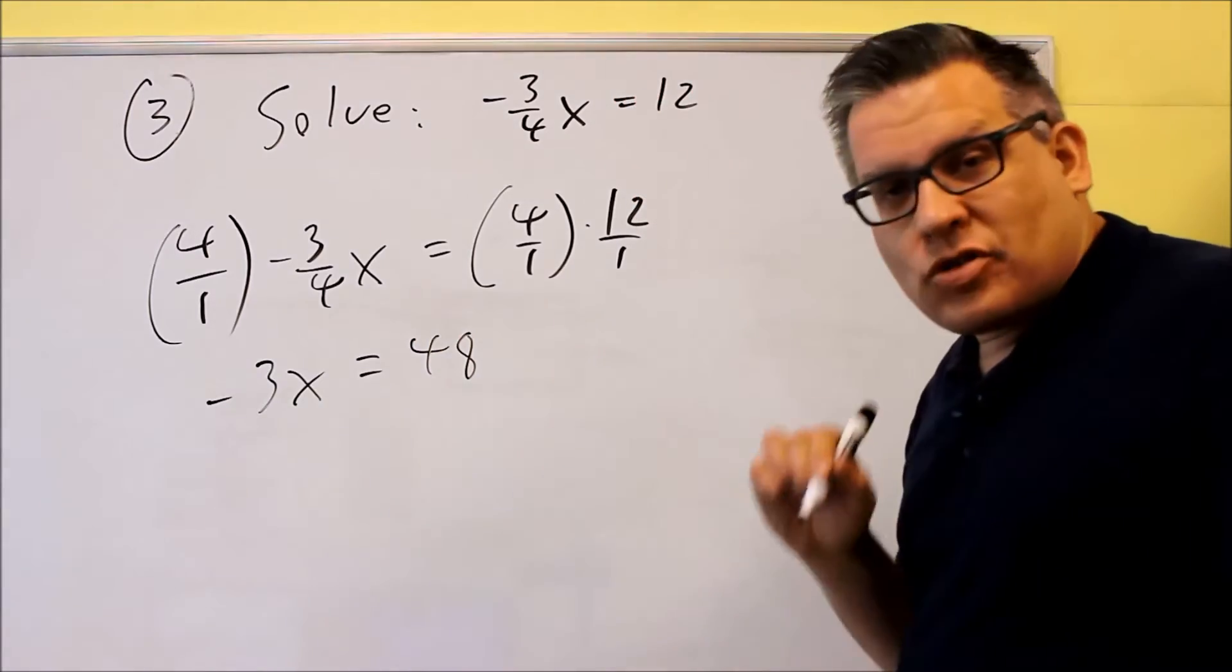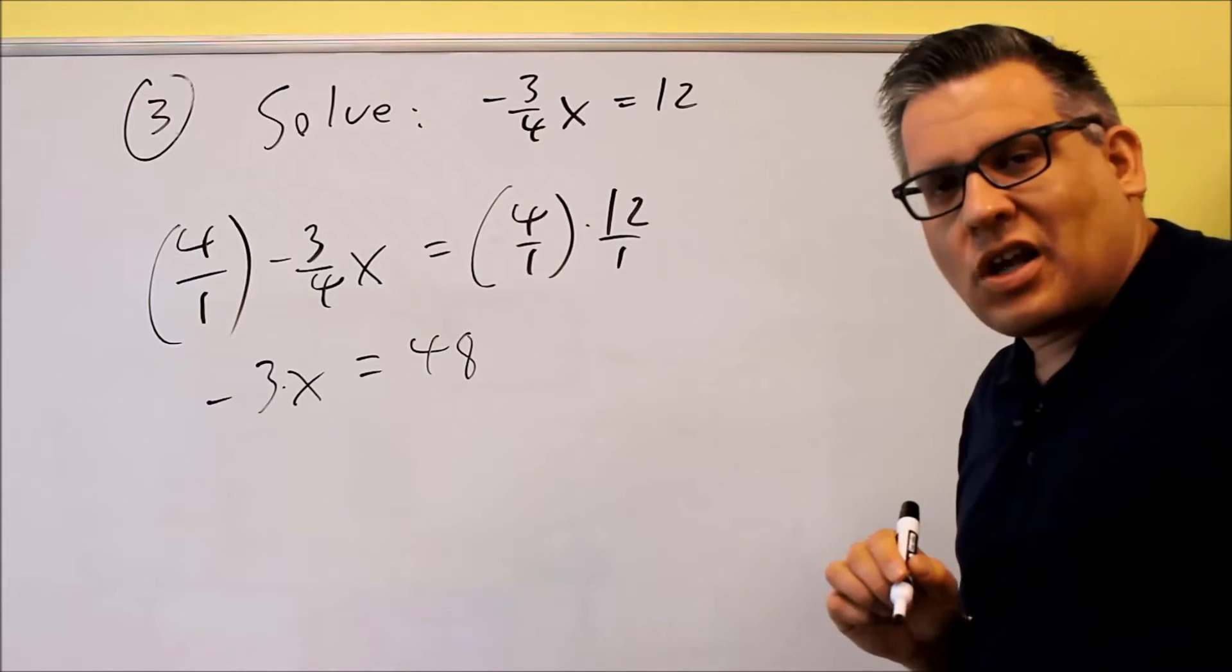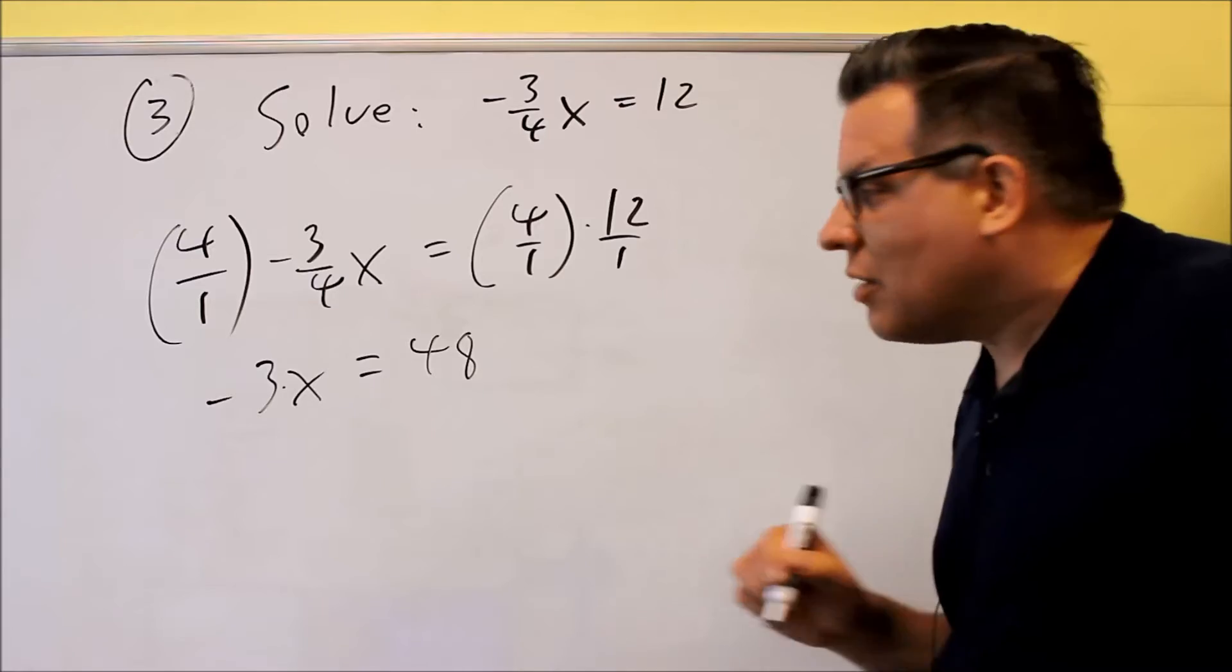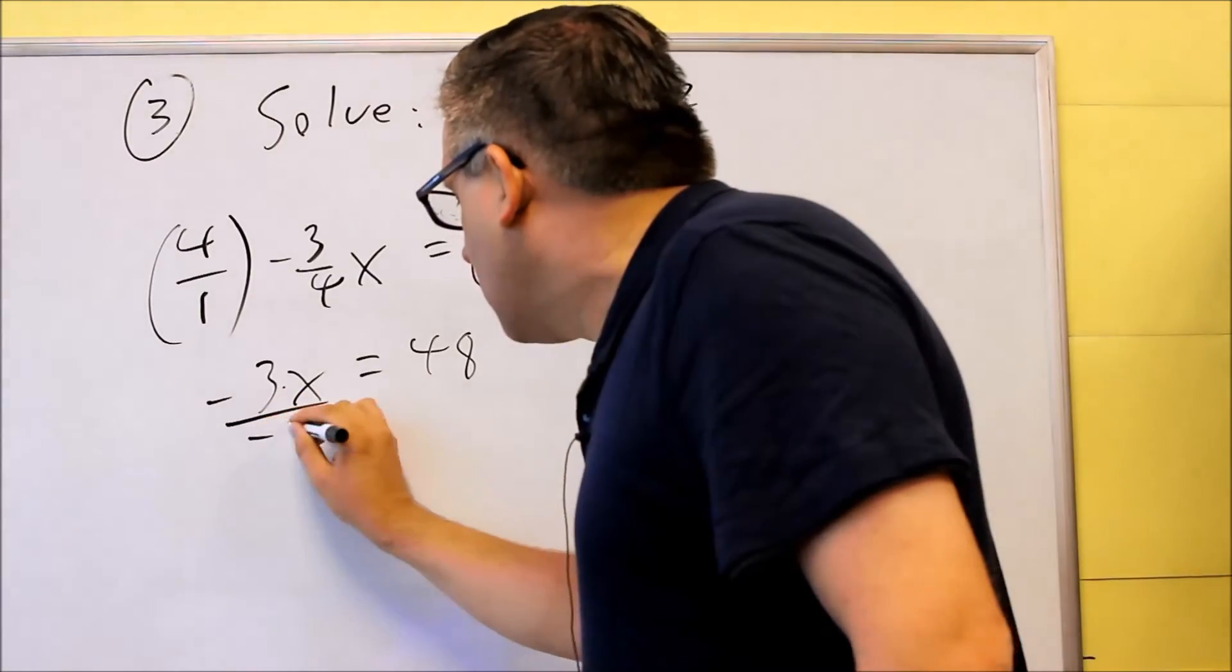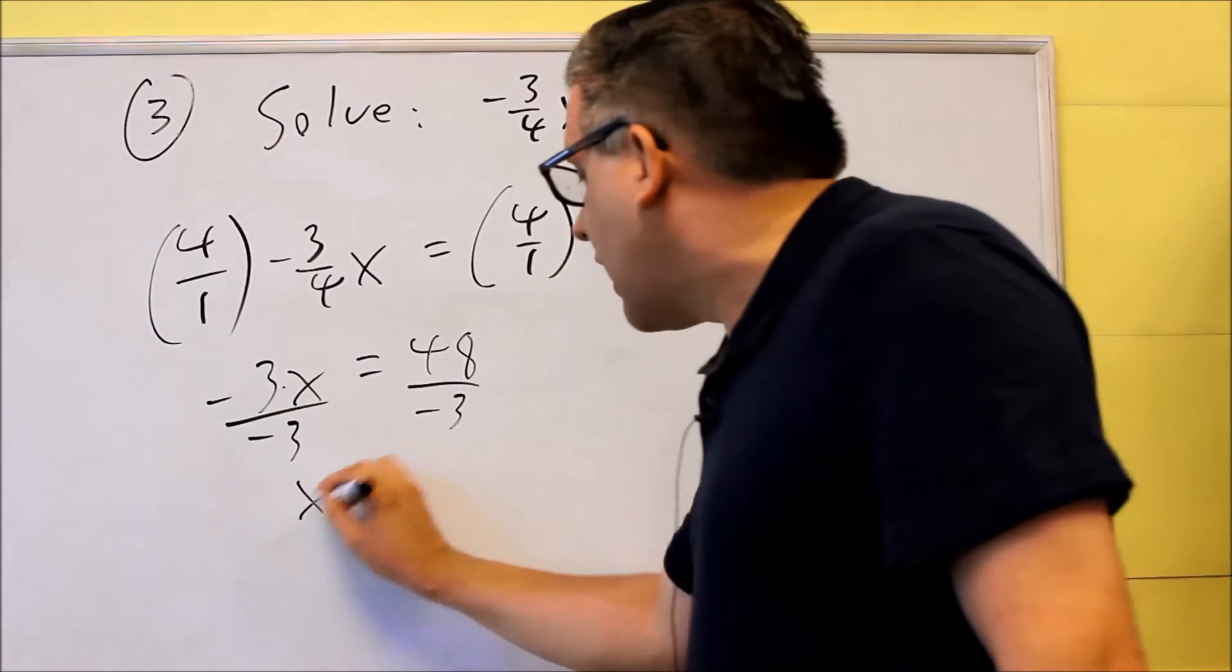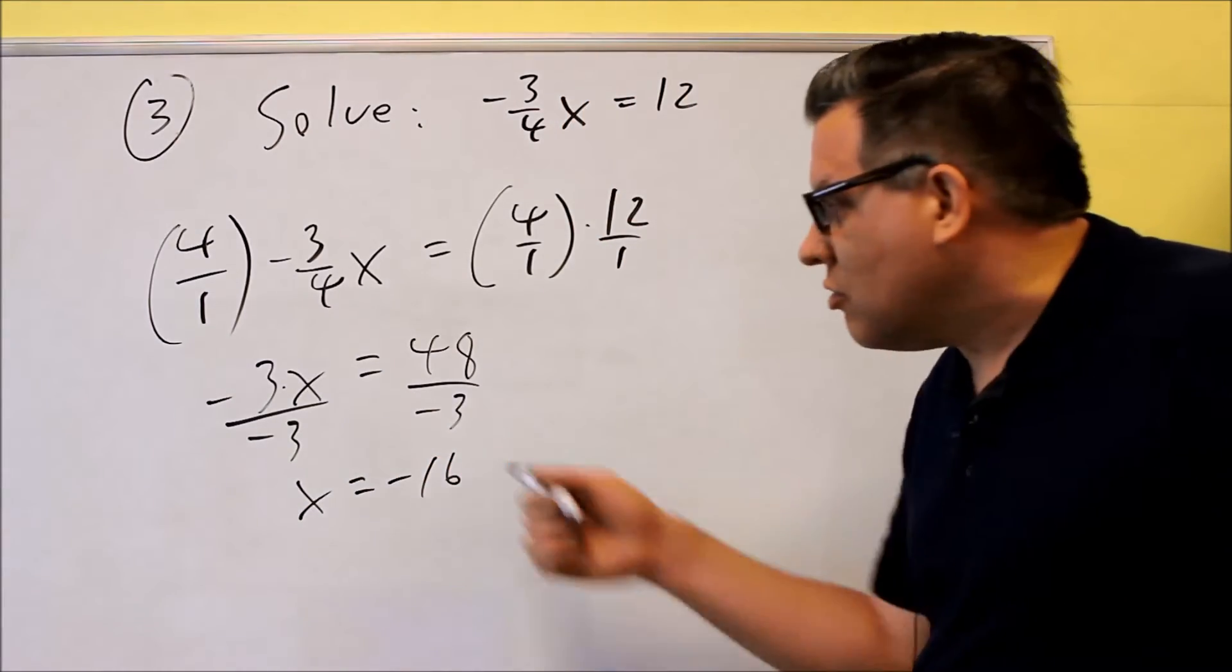And now you want to do the opposite operation. There's a multiplication happening whenever you have two things sitting together. That means it's multiplication. We do the opposite operation, which is going to be division. Divide both sides by negative 3. And when you do that, you get exactly the same answer as before, as expected. You get negative 16.